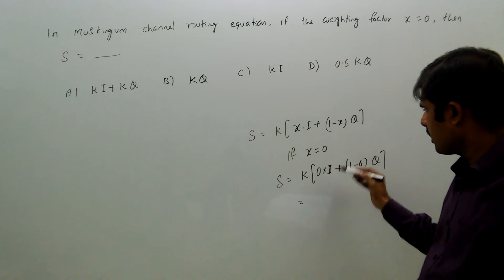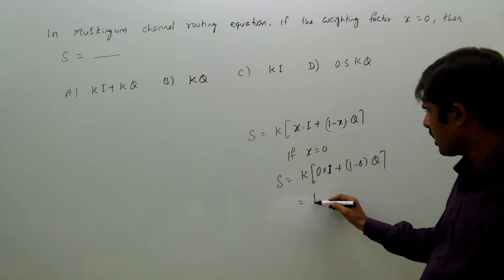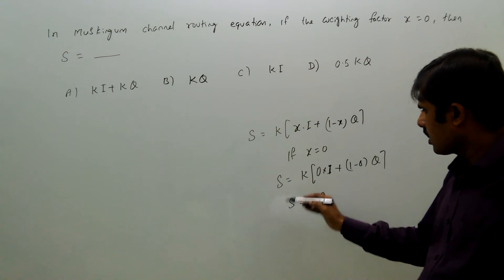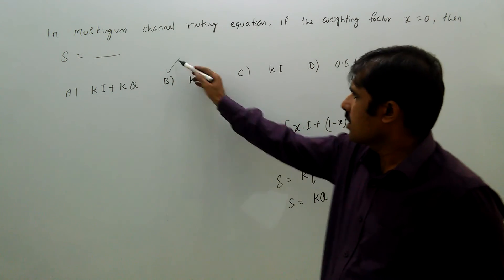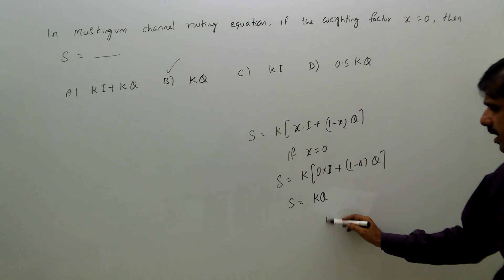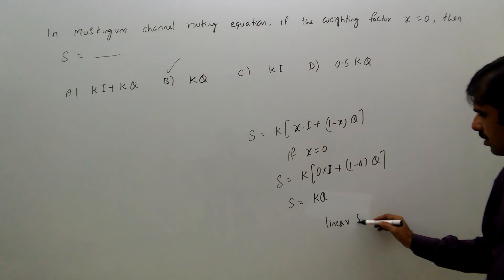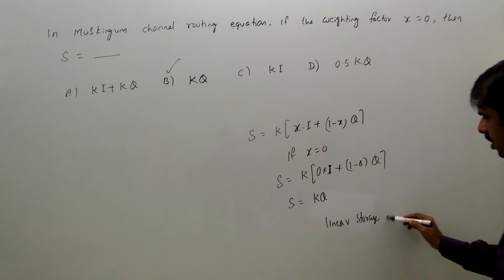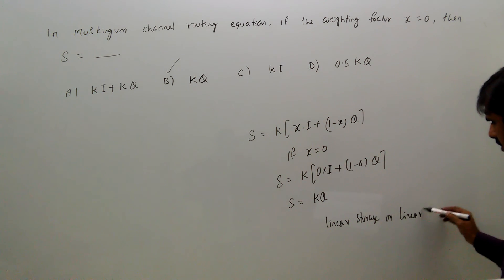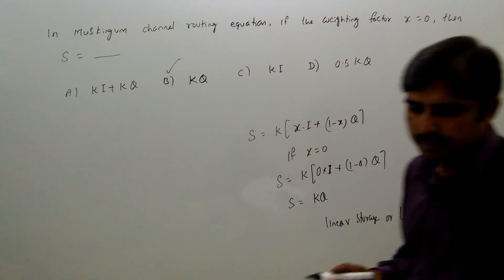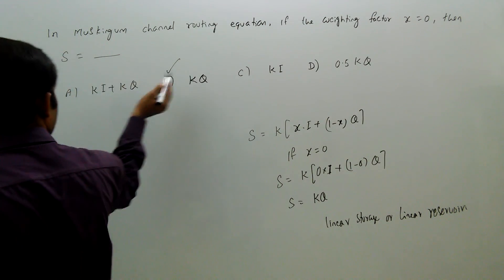That equals, 0 times I is 0, so 1 minus 0 is 1, so K·Q. Therefore S equals K·Q, option B. This is called linear storage or linear reservoir. So option B.